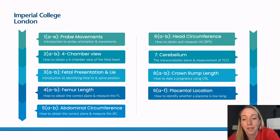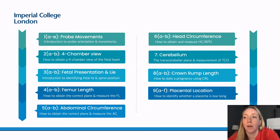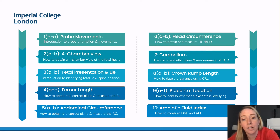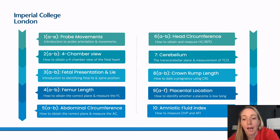We then look at placental location — specifically identifying the leading edge of the placenta and its relation to the cervix, training trainees how to identify whether a placenta is low-lying or not. And finally we move to assessment of amniotic fluid: how to measure the DVP and perform an AFI.